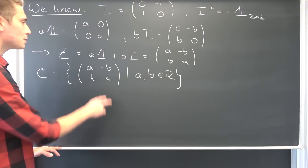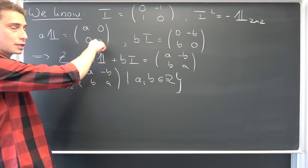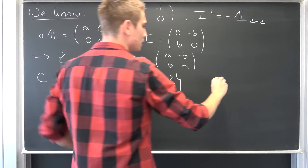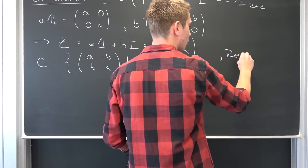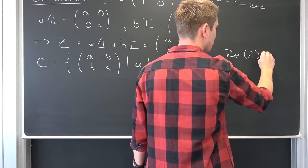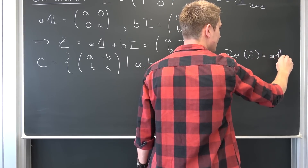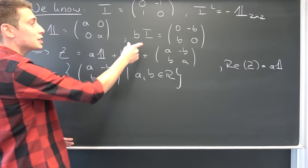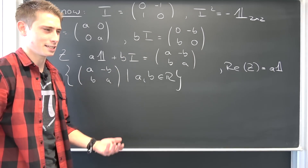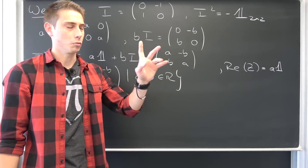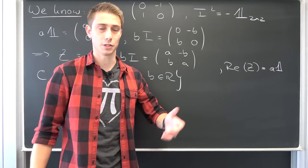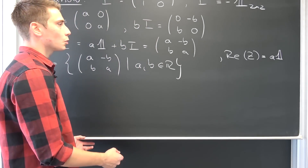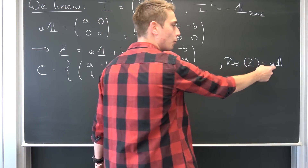The real part is simply the real entry of our complex number. We are going to denote the real part as Re, or just R — however you prefer it. It's nothing other than a times the identity matrix. Now the imaginary part — by this logic we might just take B times the identity times the imaginary unit, but no, this is not something we do. The real and imaginary parts are real operators.